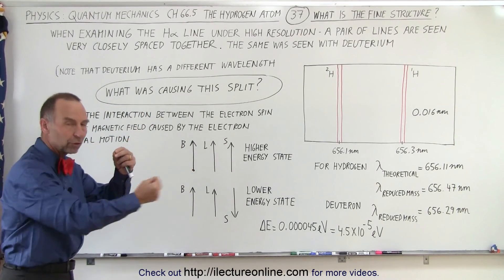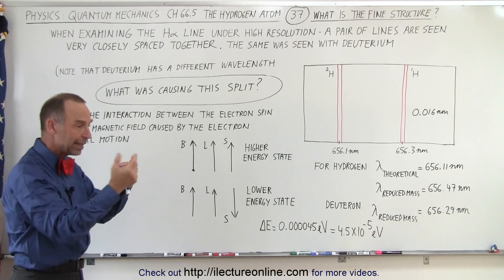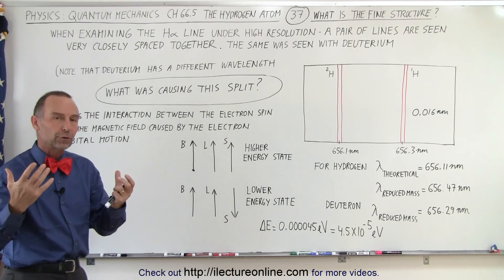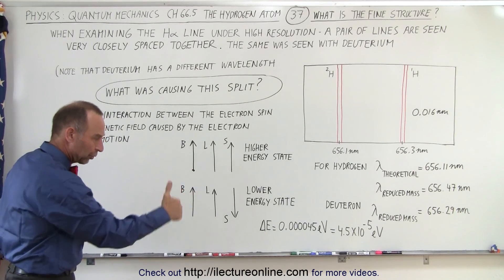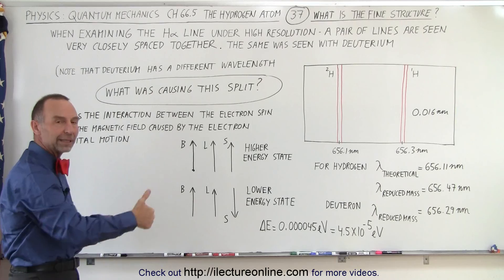Essentially, since the electron zips around the nucleus very fast, very quickly, it produces an effective current, and of course that current produces a magnetic field. If you turn your fingers in the direction of the current, the thumb points in the direction of the magnetic field.